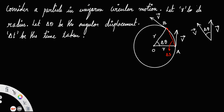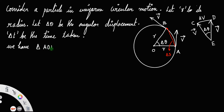The magnitude of the velocities remains the same since it is uniform circular motion. Now consider triangle AOB and let us call the velocity triangle DEC. Triangle AOB is similar to triangle DEC. How? OA equals OB (both radii), similarly EC equals ED (both equal V), and the angle between these two sides is the same. So by the SAS (side-angle-side) theorem, these two triangles are similar.